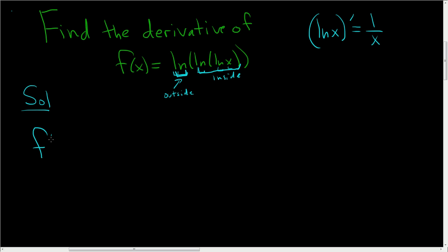So f prime of x, well, it's the derivative of the outside, which is ln x. So 1 over whatever's on the inside, you don't touch it. So ln, ln x times the derivative of the inside.